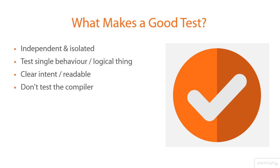We don't want to test the compiler. For example, if we're using C#'s auto-implemented properties, we don't need to test that the property get and set are working correctly — that's handled by the compiler. If on the other hand we're not using auto-implemented properties and we've got some code in our get or set, then this is something we probably should test.